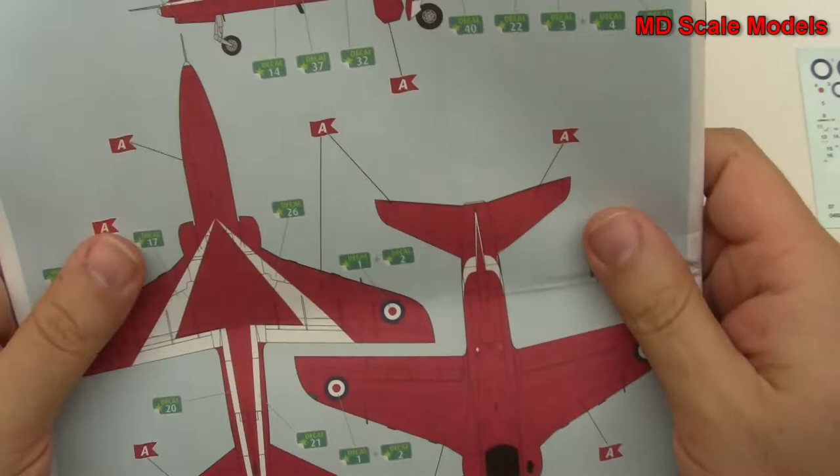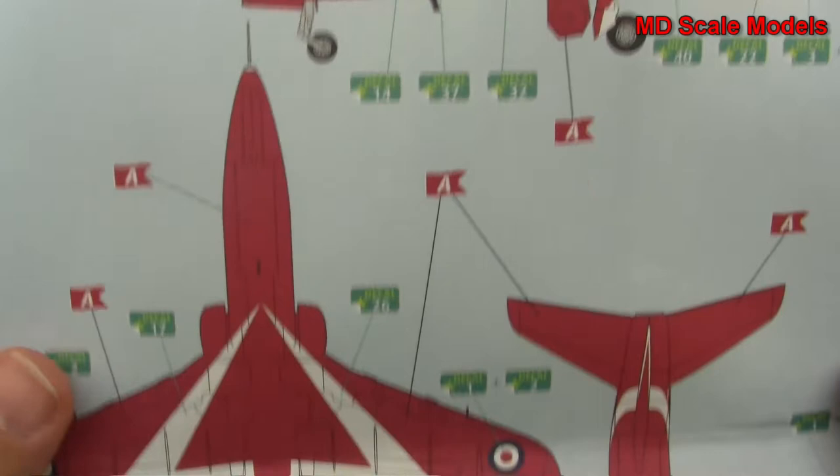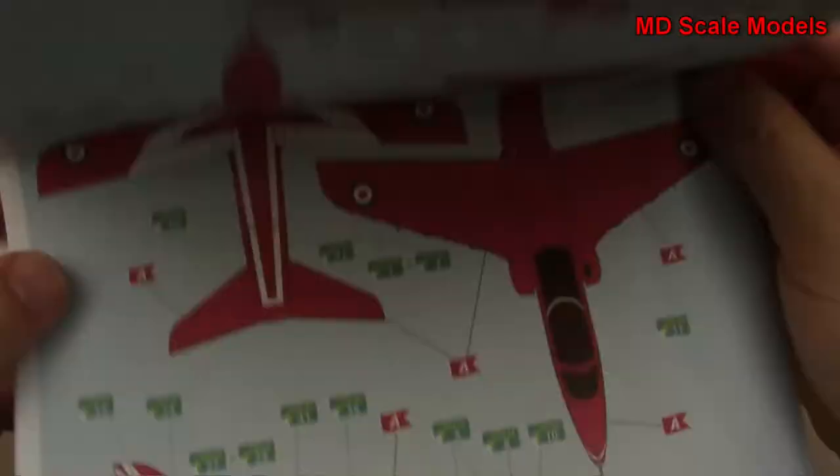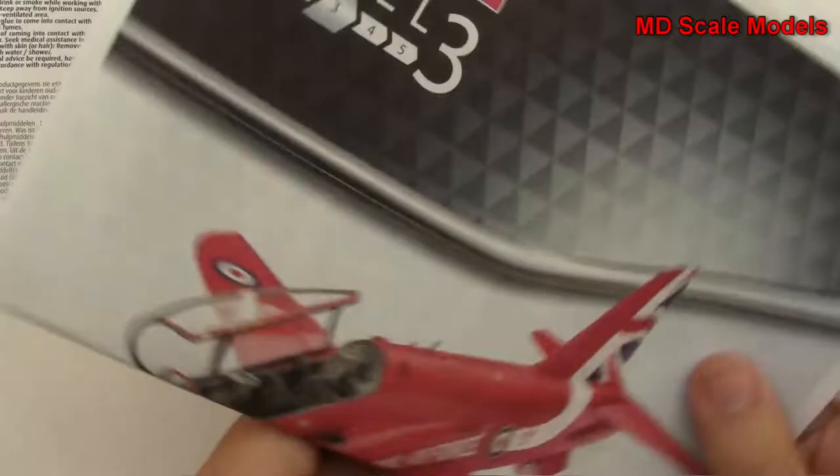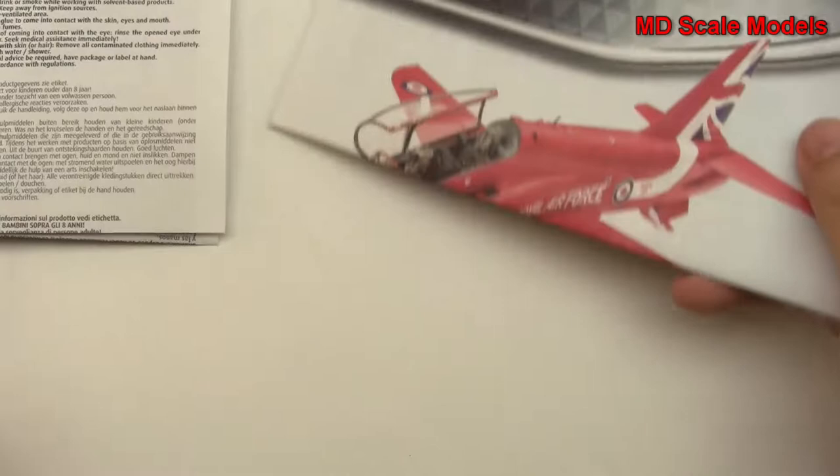And here is the painting and decal guide. Lots of decals and really, really phenomenal model here. So decals are great, molding quality is great, we've got lots of detail. You want to get recessed panel and rivet lines, you've got great detail on the wheel well and the cockpit. But this is all around a great model.